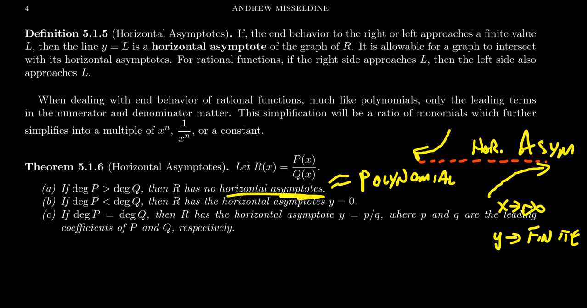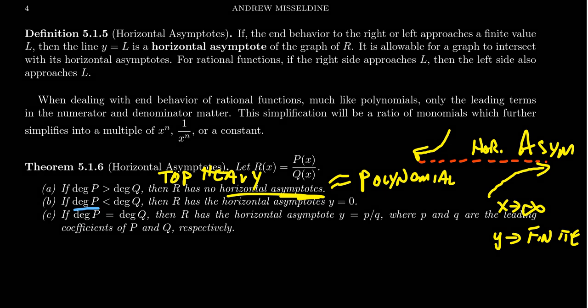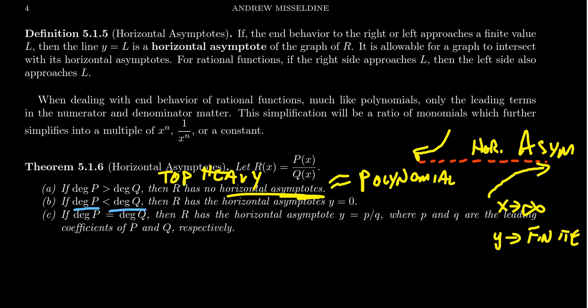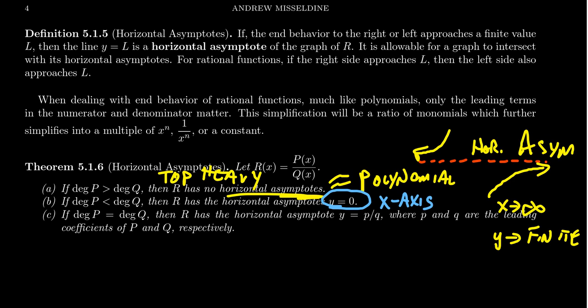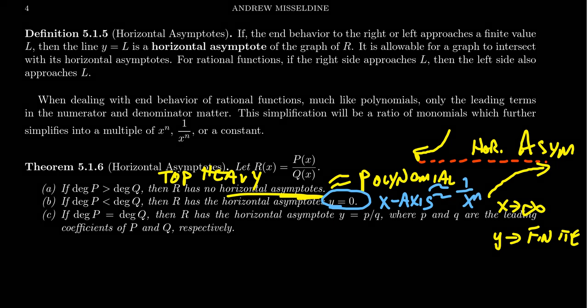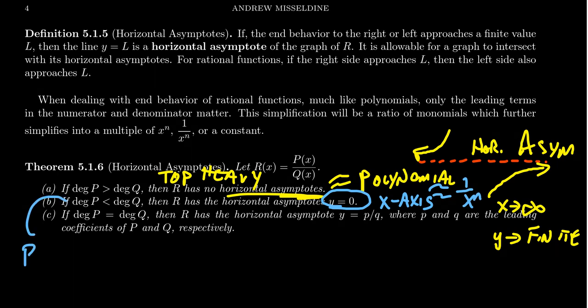This is what we call the top-heavy rational function — it's top-heavy if the top degree is bigger than the bottom. On the other hand, what if the denominator has a bigger degree than the numerator? That's like the situation of 1 over x to the n. In that situation, you'll have a horizontal asymptote at y equals 0, which is just the x-axis. Your function will be approximately the same as 1 over x to the n for some power. This is what we refer to as the bottom-heavy case.